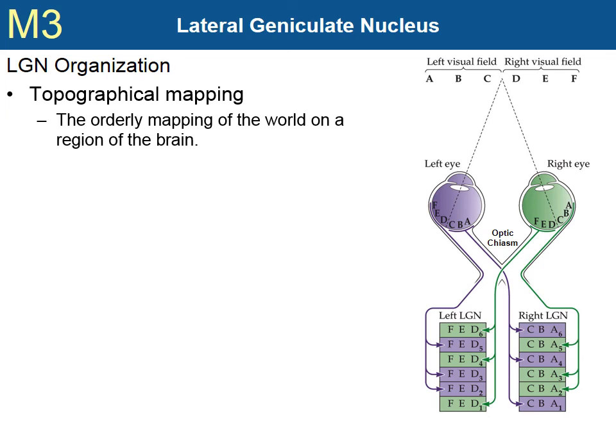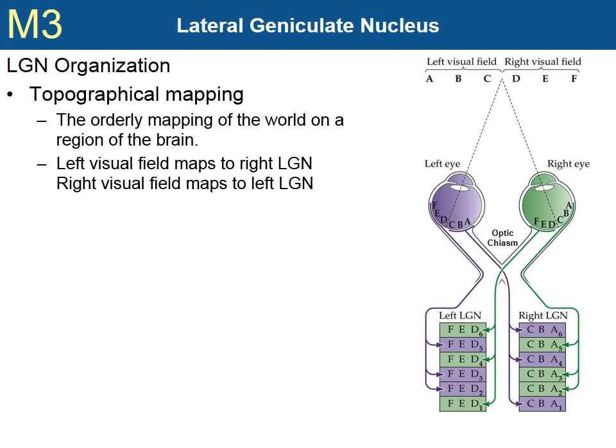The lateral geniculate nucleus is where the ganglion axons of the retina terminate. There are two important characteristics of the LGN. First, the visual world is mapped onto the LGN in an orderly way — this is called topographical mapping. That is, adjacent neurons in the LGN correspond to adjacent areas in the visual field. Assume that the eyes are fixated on the point directly in the middle of the letters C and D. The left visual field, letters A, B, and C, are projected to the right hemisphere of each eye. The right visual field, letters D, E, and F, are projected to the left hemisphere of each eye.